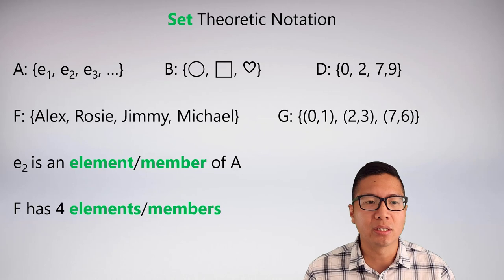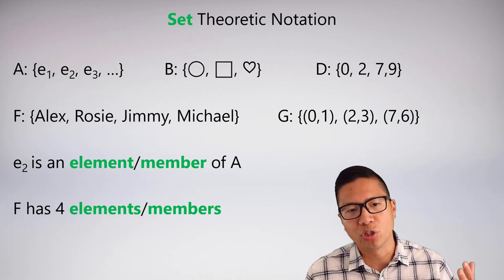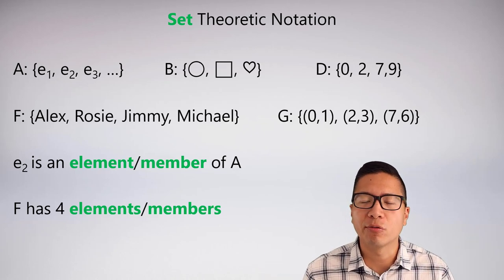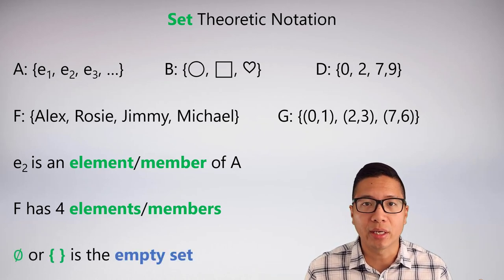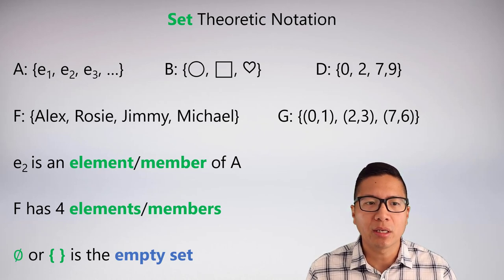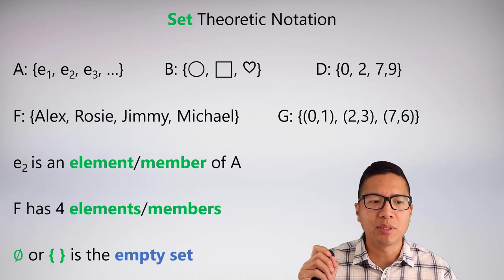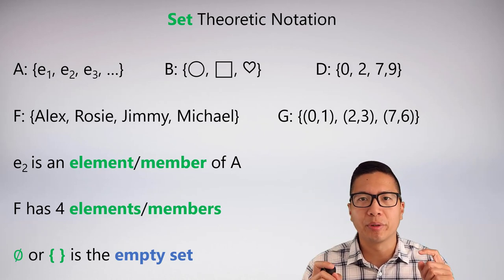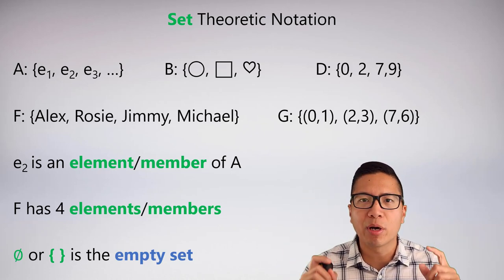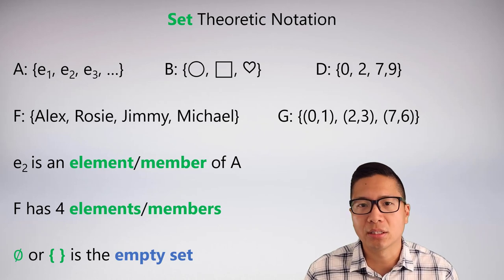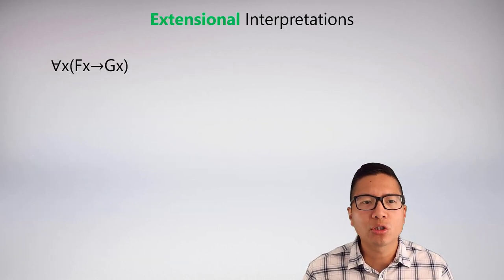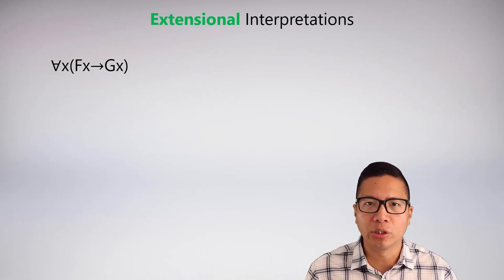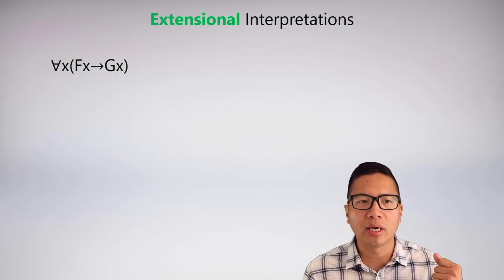We can count the number of elements in a set — set F has four members: Alex, Rosie, Jimmy, and Michael, so it's size 4. Finally, it's possible to have a set with nothing in it. We call this the empty set, and we can denote it with a special empty set symbol or just squiggly brackets with nothing inside.